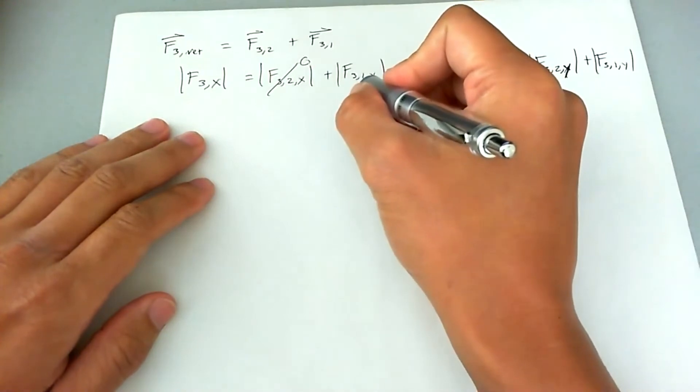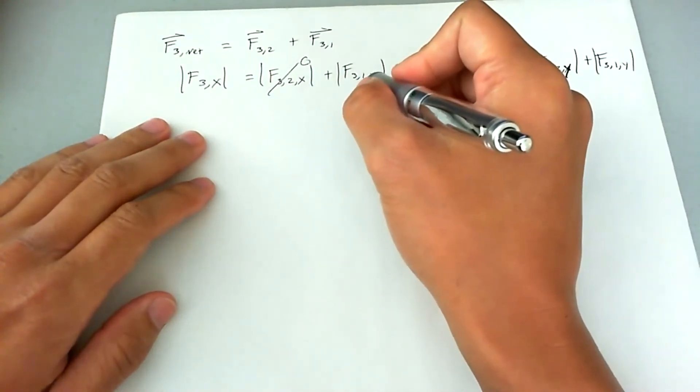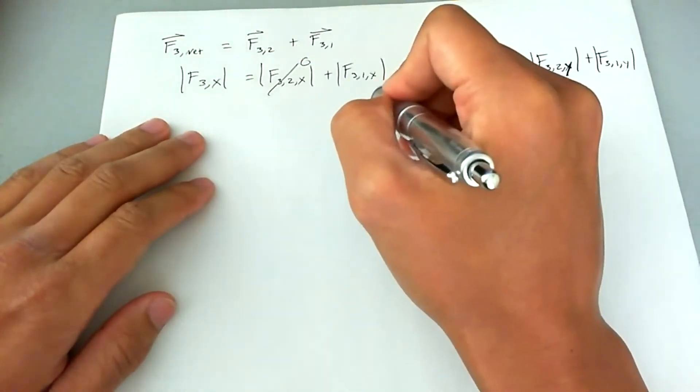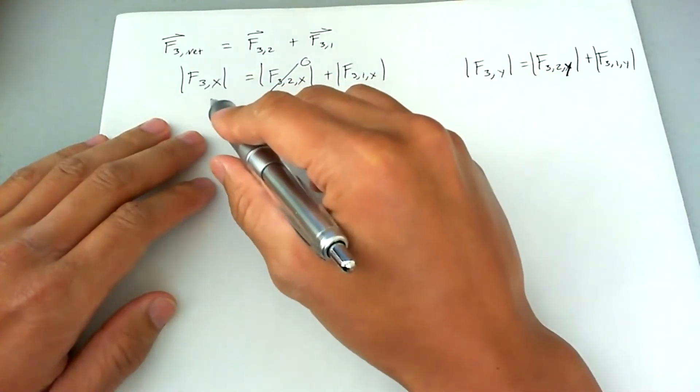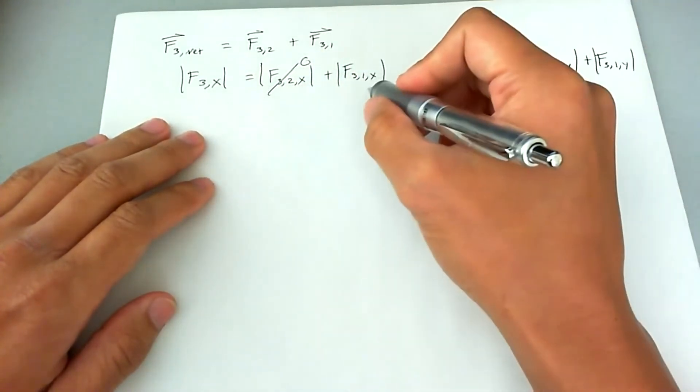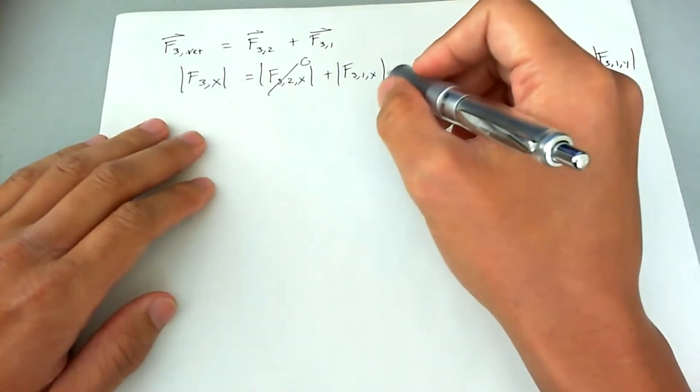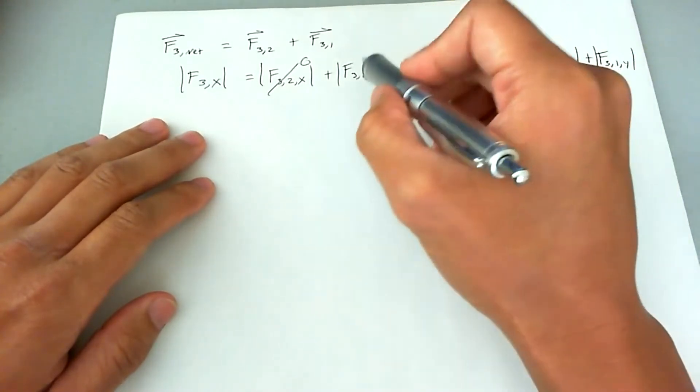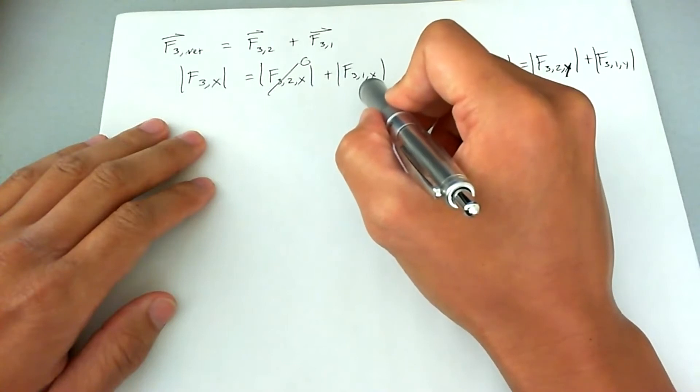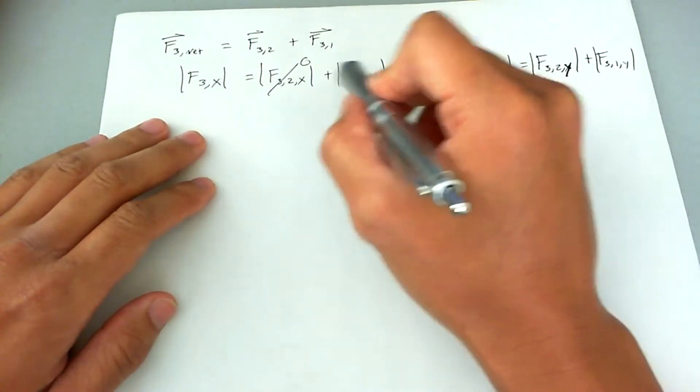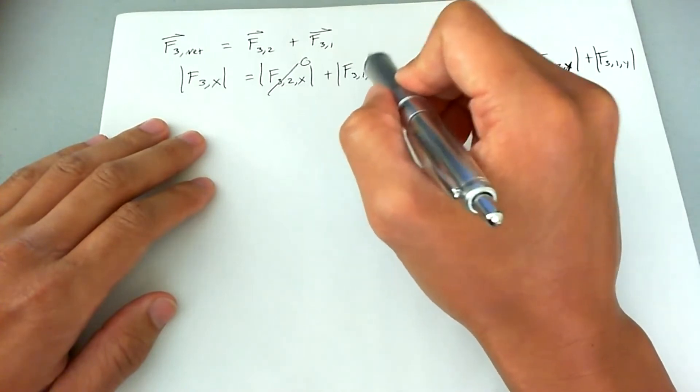That leaves the force only from charge one. So finding the x component of force acting on charge three shouldn't be too hard. Using alternate interior angles, we see that charge one is 30 degrees below the horizontal when it acts on charge three.